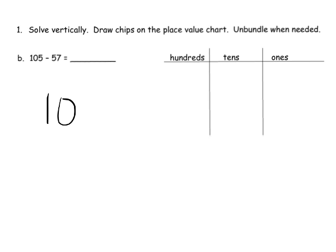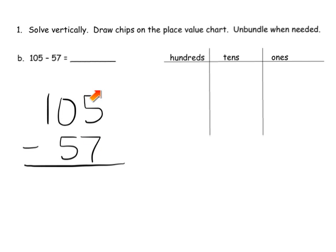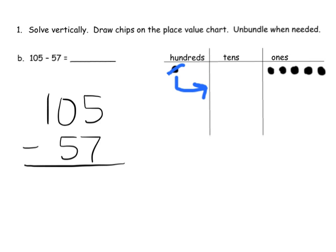We're going to begin by writing 105 minus 57 vertically, making sure that the 1s are lined up, the 10s are lined up, and the 100s are lined up. I'll model this on our place value chart first, modeling 105. Now we're supposed to take away 57, so let's take away 7 ones. Well, we don't have enough 1s to take away 7, so we're going to have to do some unbundling.